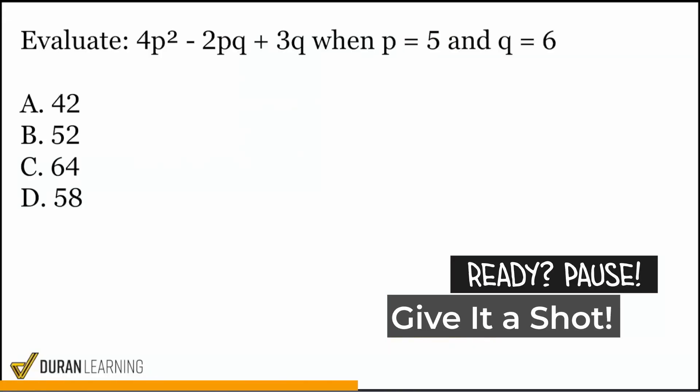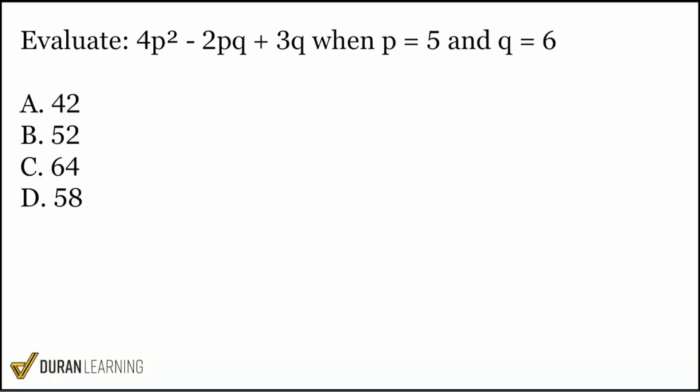In this next one we're trying to evaluate an expression. We have p and q which can be very similar if you read quickly. We have p equals 5 and q equals 6. Let's replace all those values: 4 times p squared is 4 times 5 squared, minus 2 times p which is 5 times q which is 6, plus 3 times q which is 3 times 6.